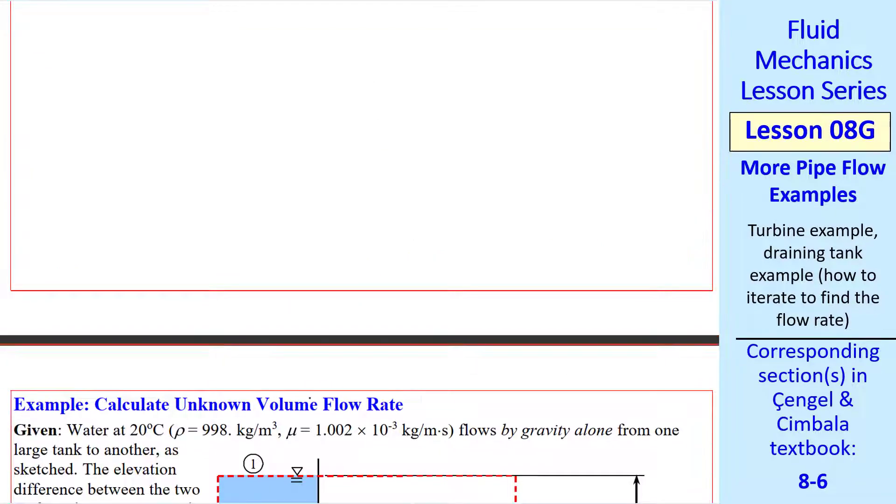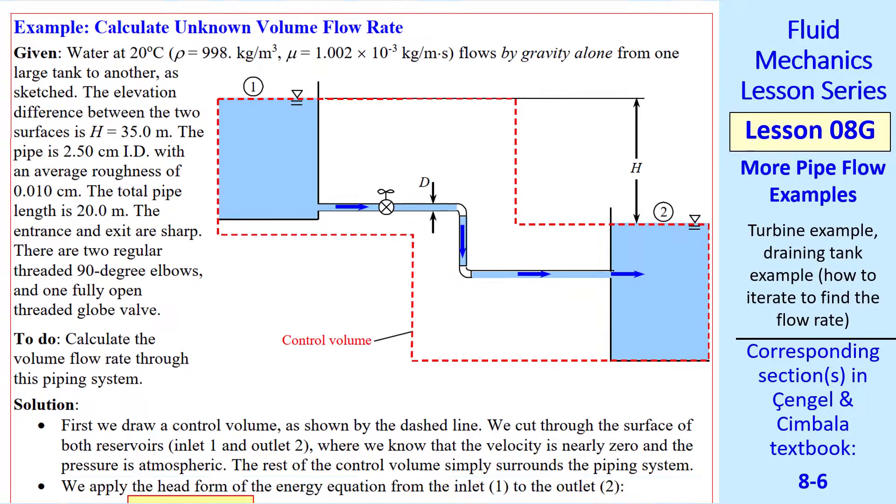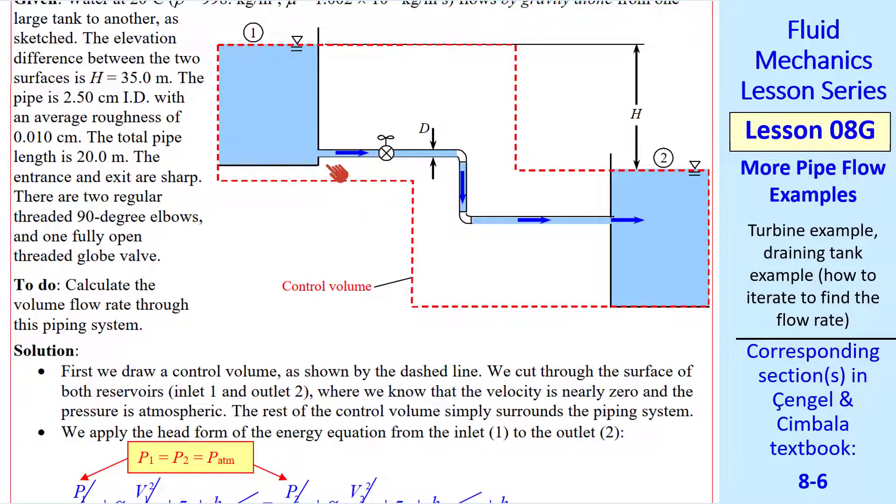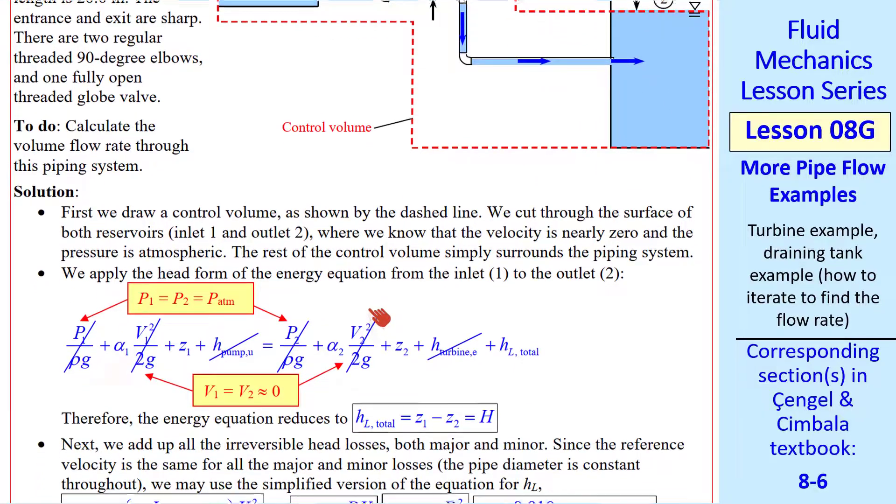For the next example problem, we have an unknown volume flow rate. Here we have water draining from a tank with a valve and two elbows, a submerged outlet, and a sharp inlet. But unlike all the previous problems, we don't know the volume flow rate. That's what we want to find. We're given the height difference, the pipe diameter, roughness, pipe length, and the kind of elbows and valve we have. Again, the first step is to draw a control volume, which I already did in the usual fashion. And we apply the head form of the energy equation.